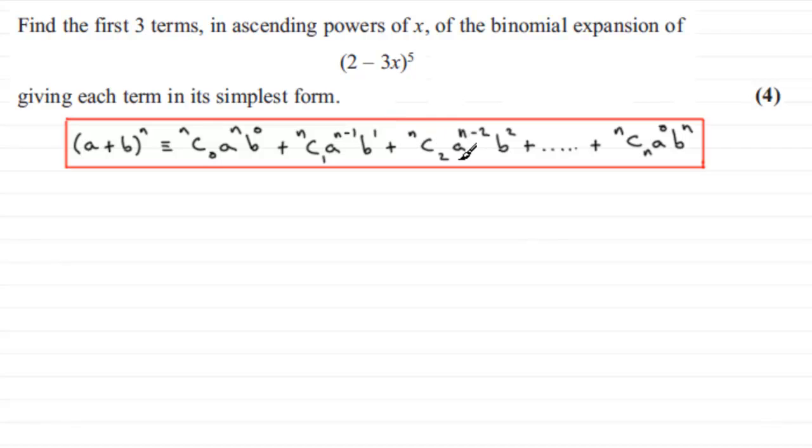And then we do nC2, again drop the power on a by 1, so it's now a to the power n minus 2, and increase the power on the previous b by 1, so it's now b squared. And we carry on with this, okay, like this.